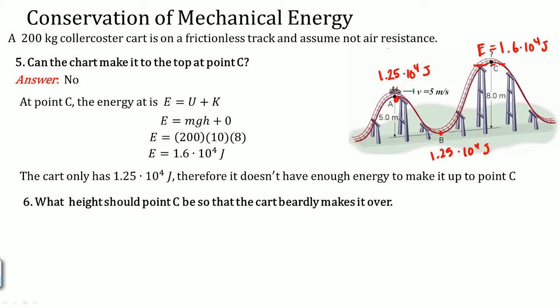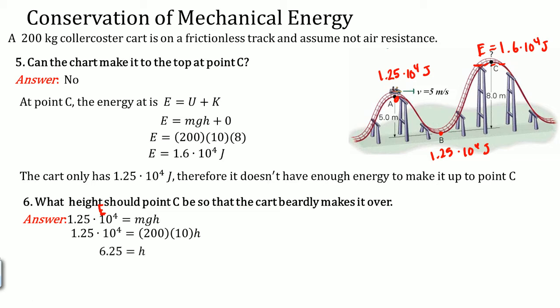What height should point C be so that the cart barely makes it over? We know 1.25 × 10⁴ joules is the total energy the system has. At any moment it can be fully transferred to potential energy, which is MGH. So set 1.25 × 10⁴ equal to MGH and solve for H — you have M and G, so multiply them and divide over. The height works out to 6.25 meters. The roller coaster can only be 6.25 meters high to barely make it over.